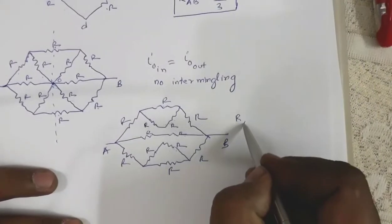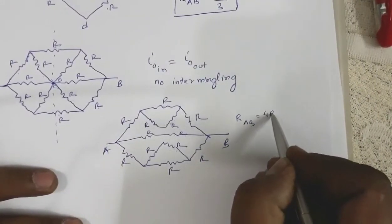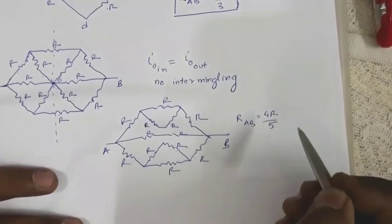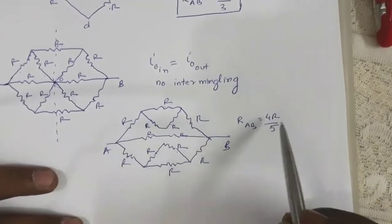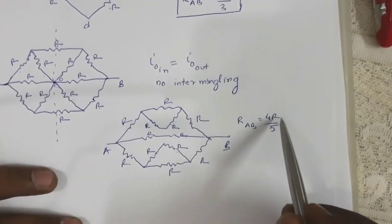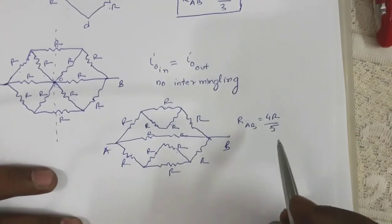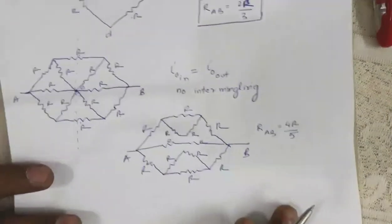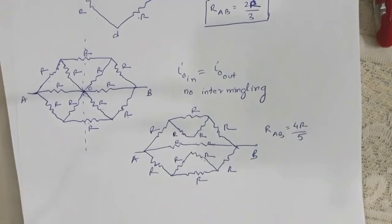Solving this, you will get R_AB equal to 4R/5. I have already solved this and the answer is R_AB = 4R/5. You can check this answer yourself.